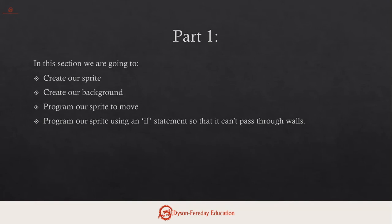To start with today, we're going to produce a background, a main sprite, we're going to get our sprite to move, and we're going to add in an if statement so that it can't pass through the walls as we play the game. By the end of this session we'll have a movable sprite and a working background, but it won't really be a game yet, and then we'll start to add in things like lives in the later levels.